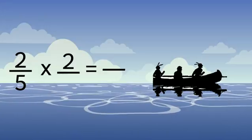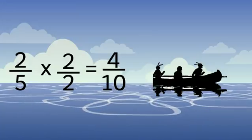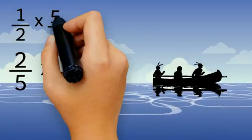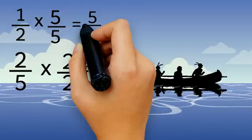We can now take 2-5ths, multiply the numerator and denominator by 2, and that equals 4-10ths. We can take 1-2, multiply the numerator and denominator by 5, and that gives us 5-10ths.